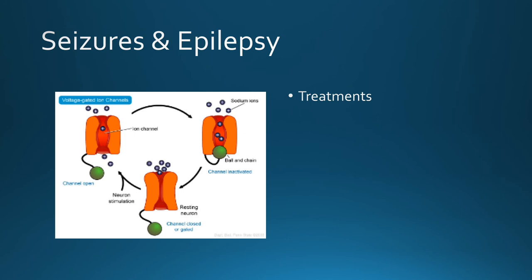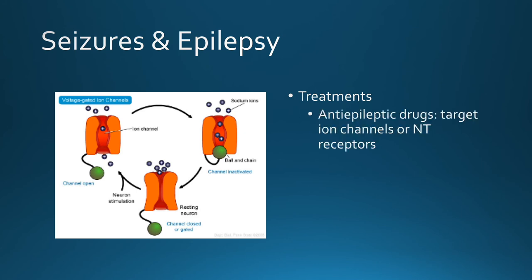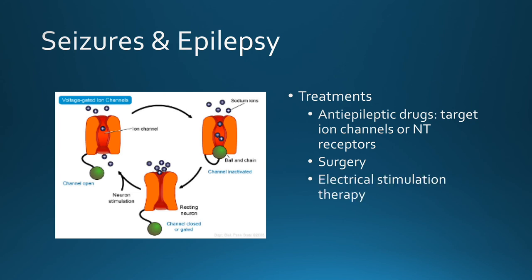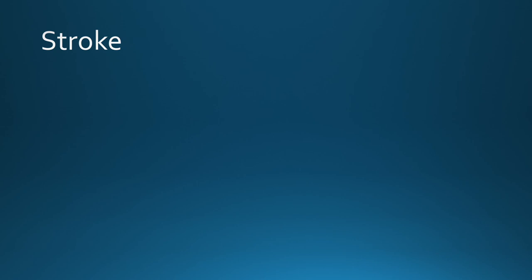Most mutations seen in patients with epilepsy are in voltage-gated ion channels. At resting stage, when these channels are closed, ions cannot pass. In response to neuronal stimulation, the membrane potential increases, opening the channel and allowing sodium ions to pass, propagating a neuronal current. In epileptic patients, mutations can result in malfunction of these ion channels, inducing irregular neuronal activity. Therefore, therapies target these ion channels, such as anti-epileptic drugs, surgery, or electrical stimulation therapy.